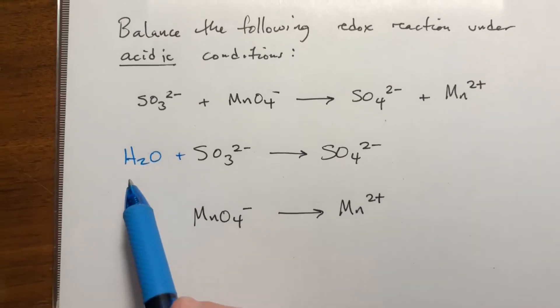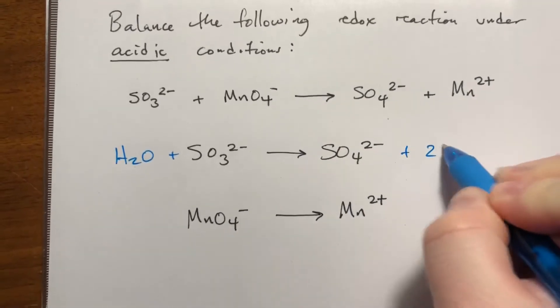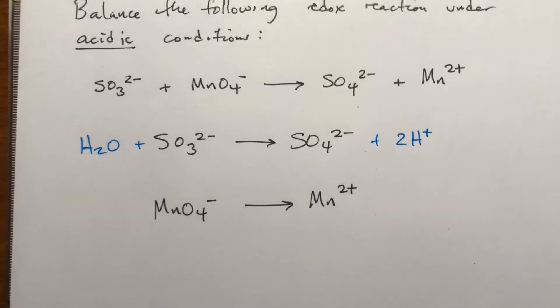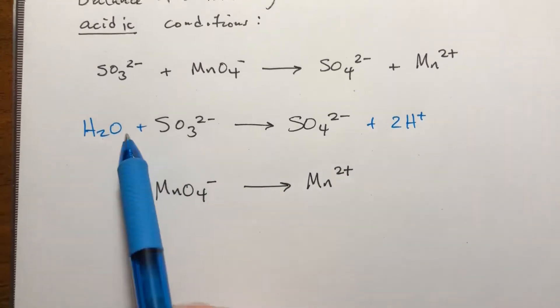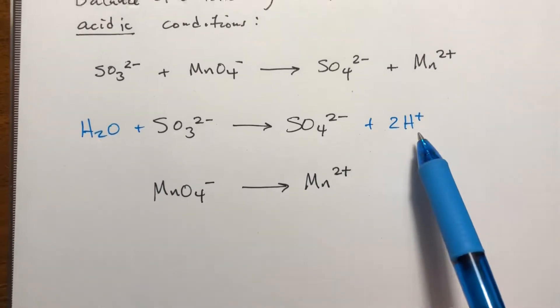Unfortunately we've added a bunch of hydrogens, so now we have to add two hydrogens over here. At this point our atoms should be balanced. One sulfur, one sulfur, four oxygens, four oxygens, two hydrogens, two hydrogens.